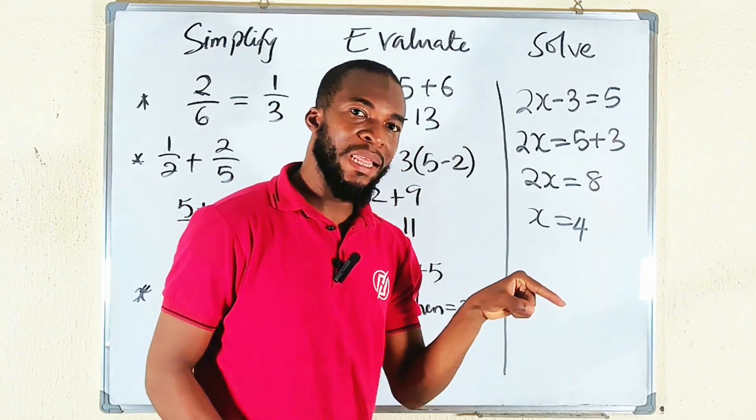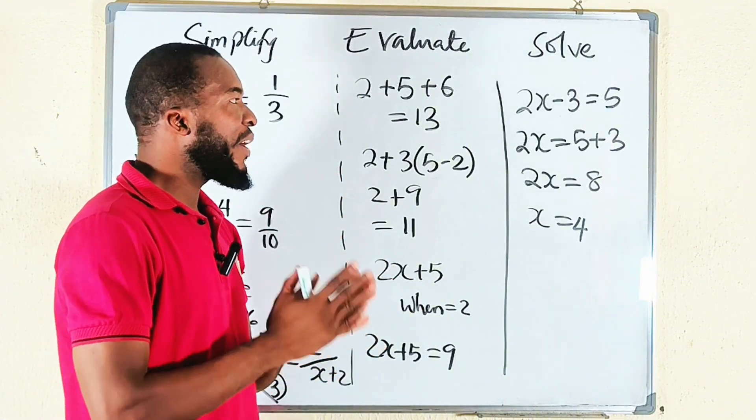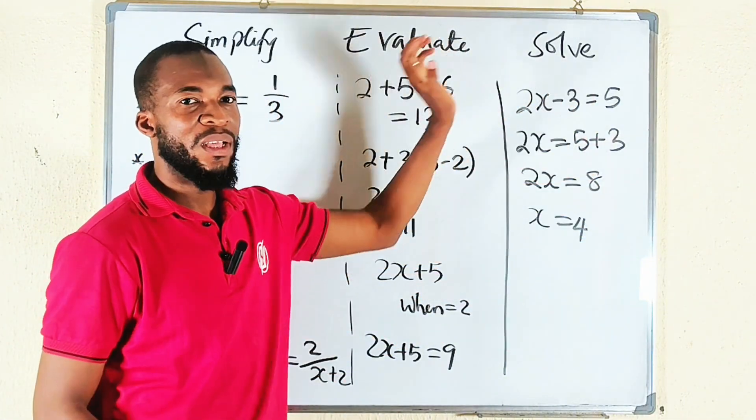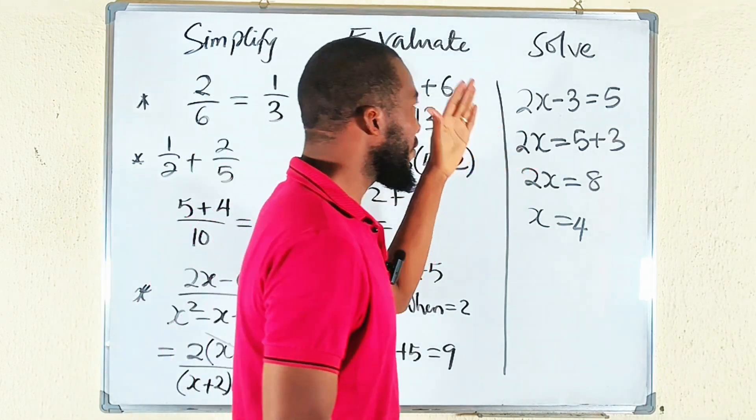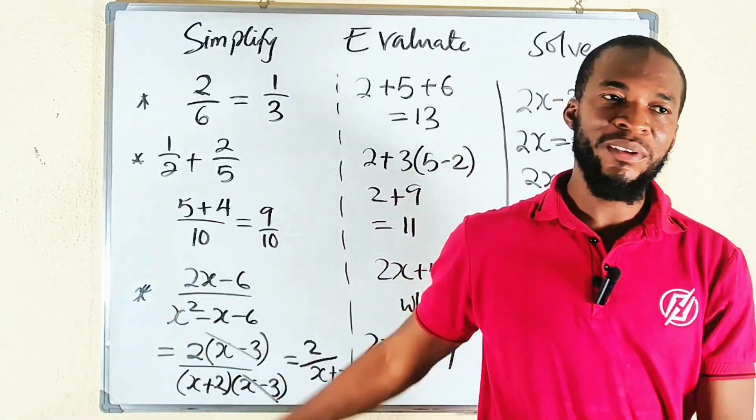For example, if the left-hand side is concocted, you can simplify it before you solve, you understand? But what we have done here is solving. We are finding the solution to 2x minus 3 equal to 5. So this is the difference.